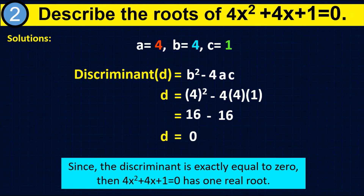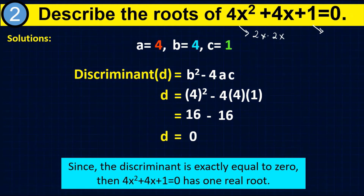To verify that the equation has one real root, we can use factoring. We take the factors of the first term and last term. For the first term, we have 2x times 2x, or x times 4x. The last term is 1, and its only factors are 1 times 1. Using trial and error, we test the factors to match the middle term. Since the last term is positive and the middle term is positive, the signs are the same — both positive.